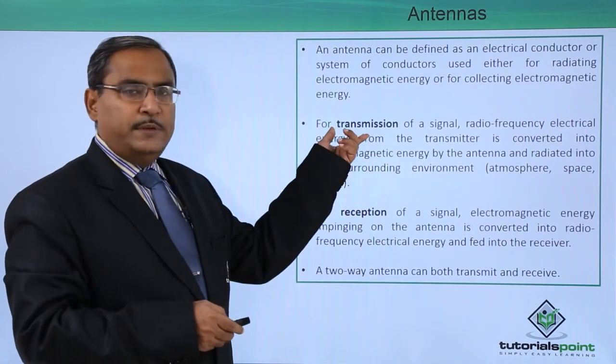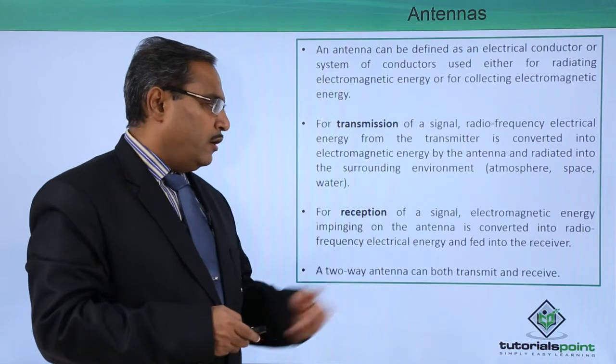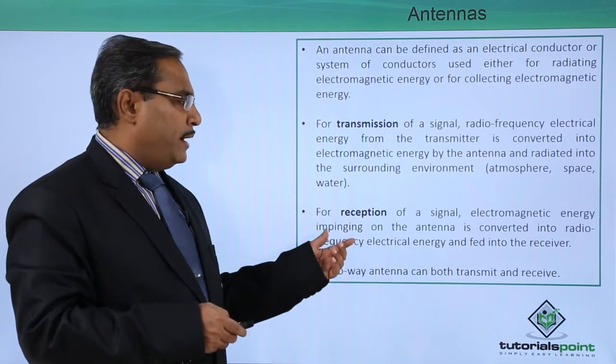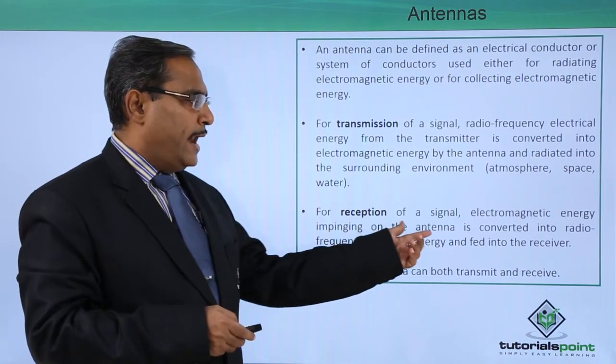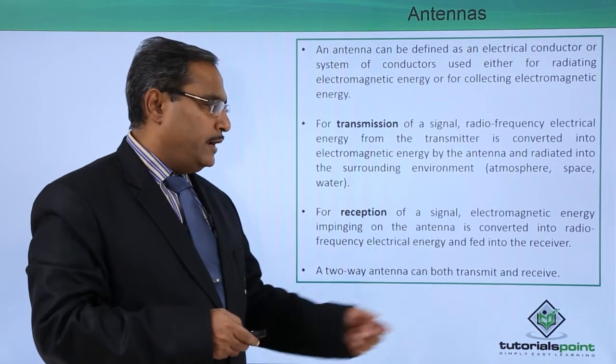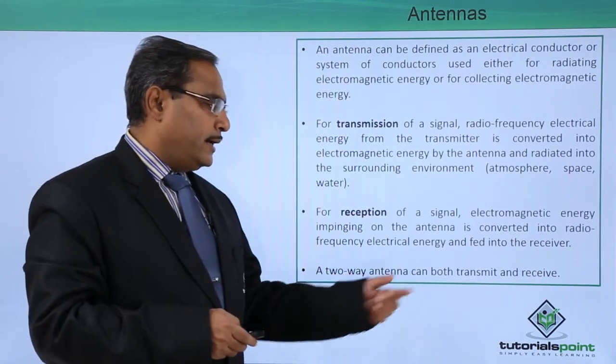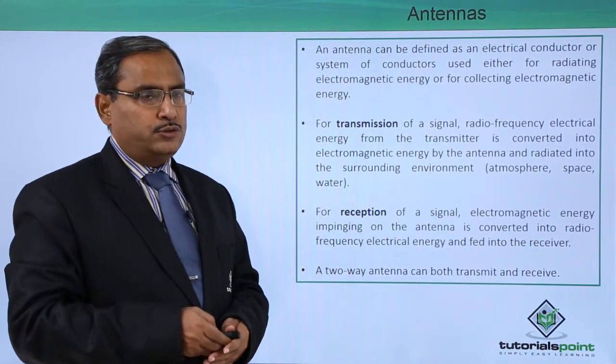For reception of a signal, the electromagnetic energy impinging on the antenna is converted into radio frequency electrical energy and fed into the receiver. A two-way antenna can both transmit and receive.